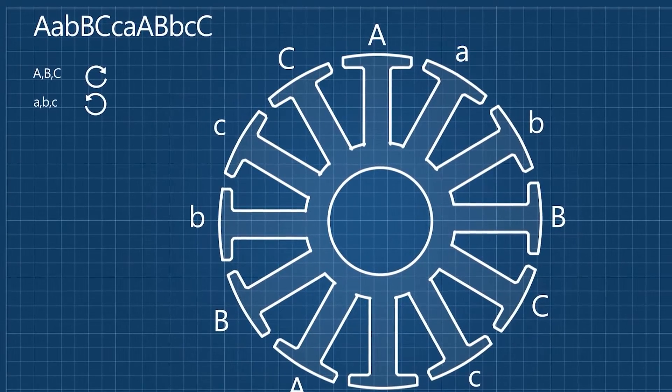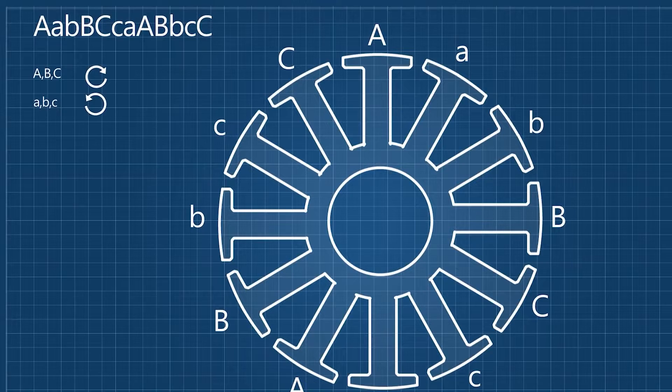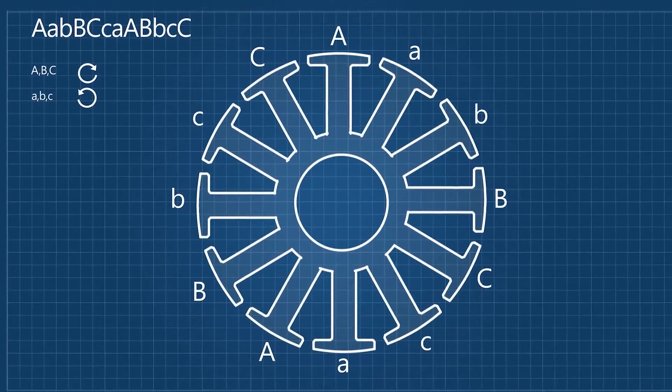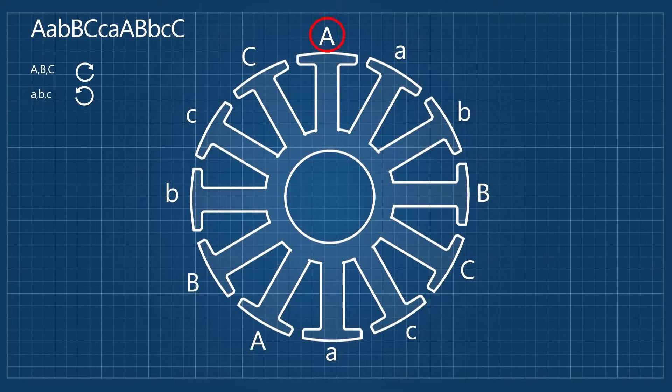It doesn't matter if for capital letters you select to wind in clockwise or counterclockwise direction, as long as for the small letters it's the opposite. So we start winding this stator according to the information given. We start from pole number one. To avoid any confusion on the direction of the winding, make sure every pole you're winding is pointing towards you. As you see, that's phase A represented by the red color.